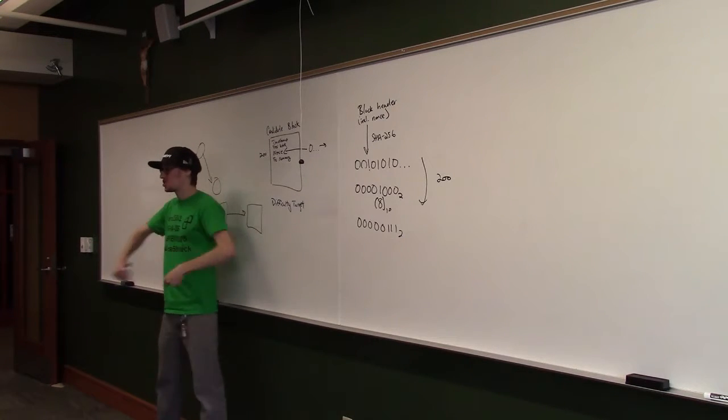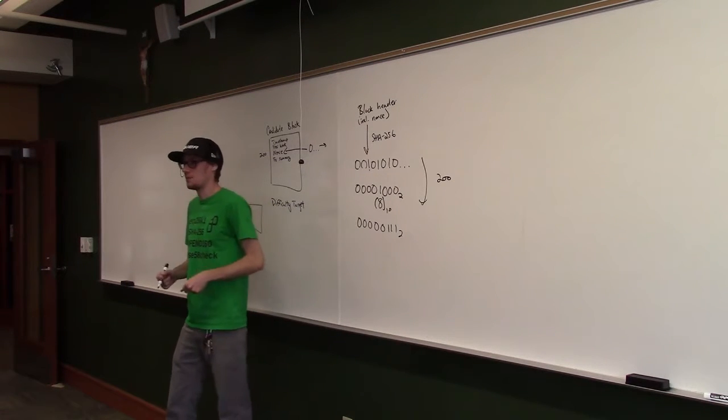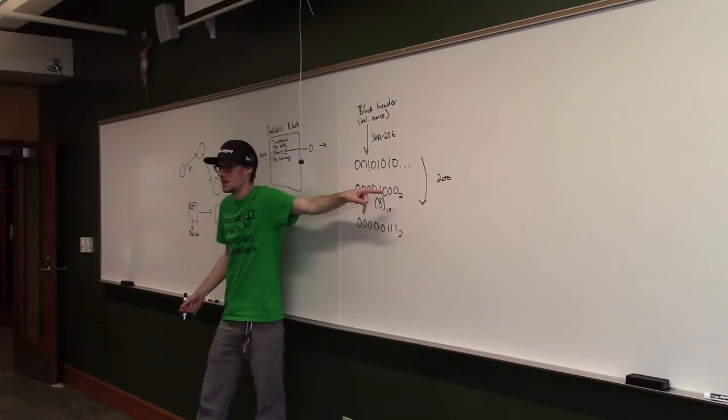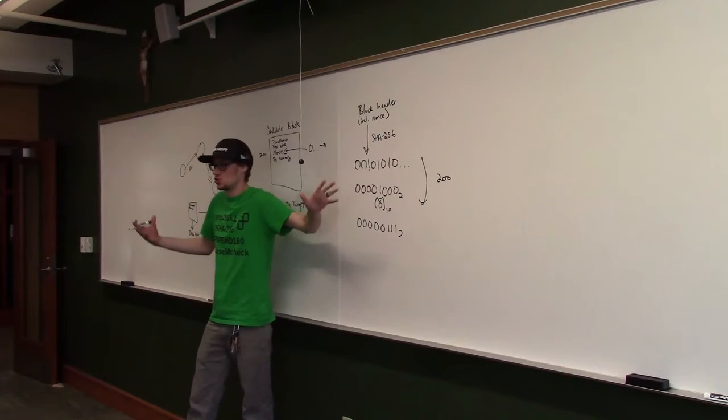They now have a block that meets the proof of work requirements set by the network. Remember, they had to expend a lot of guessing power to get to this number. 200 isn't really a lot, but in real Bitcoin this number is billions, trillions of guesses, huge, huge, huge numbers.